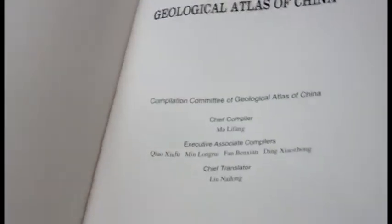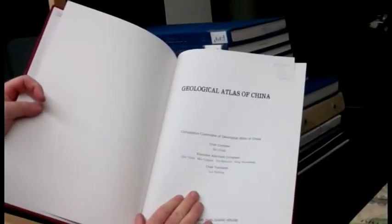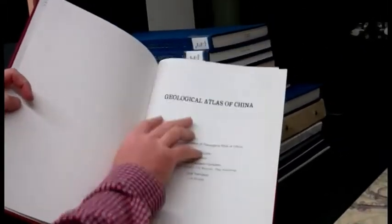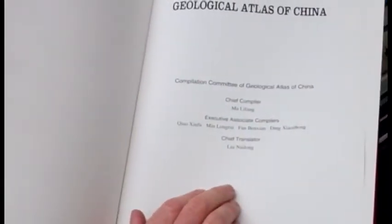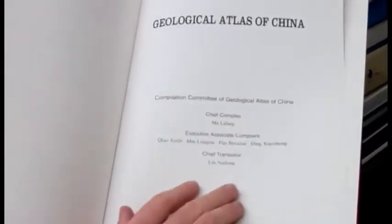I wouldn't get that information from the cover necessarily. Atlases are easy compared to maps because they have a title page like a book. And oftentimes the person or entity responsible is a lot easier to see pretty clearly. So obviously the title, Geological Atlas of China. It's pretty clear that the compilation committee of the Geological Atlas of China has main responsibility. So I would add that as the author.